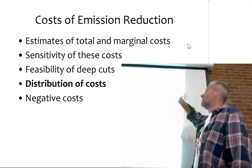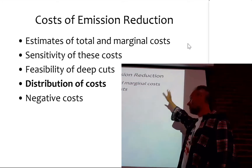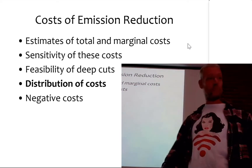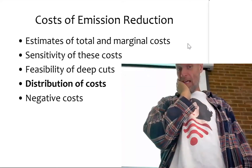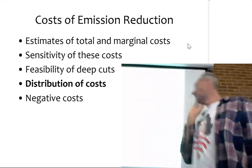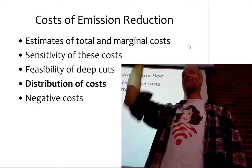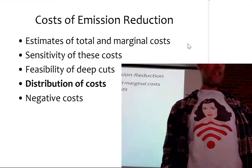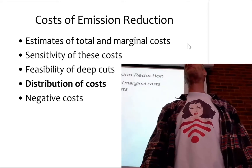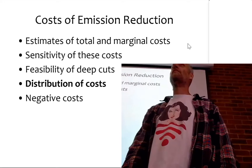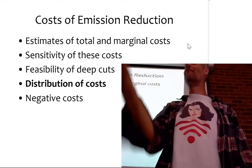I talked about estimates - what is the order of magnitude of these things and why there's disagreement. I also talked about the feasibility of deep emission cuts. When I talked about total and marginal cost of emission reduction, I just talked about these things on average. But it's also interesting to say things about the distribution of cost, and politically, it matters much more how costs are distributed over the population than what the average is.